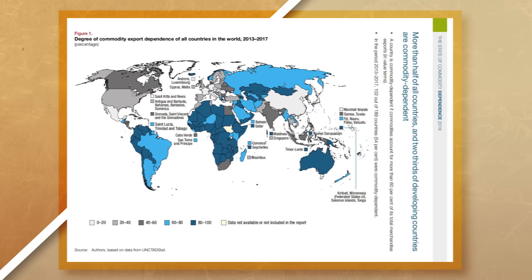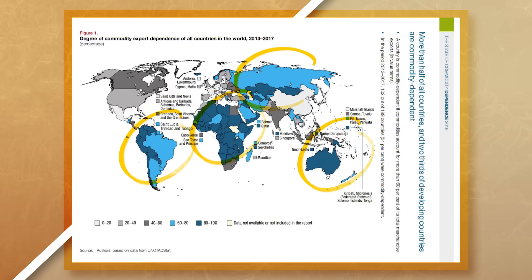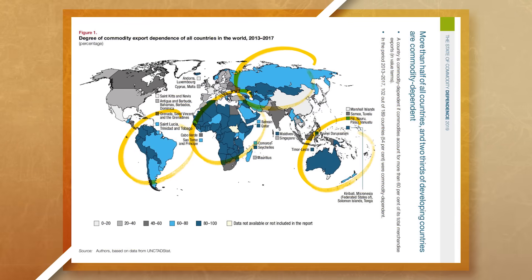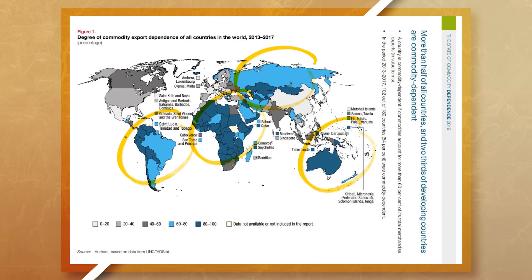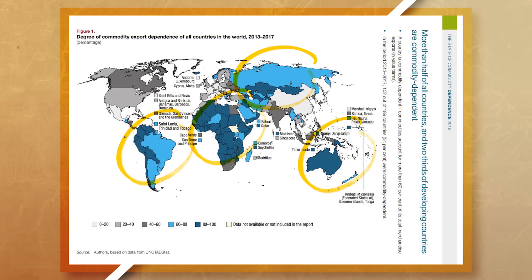When looking at the world, we can see that many countries located in the periphery or semi-periphery have a commodity dependence. We will go more into commodity dependence and the impact it has on a country's economy in our Unit 7 Topic 5 video.